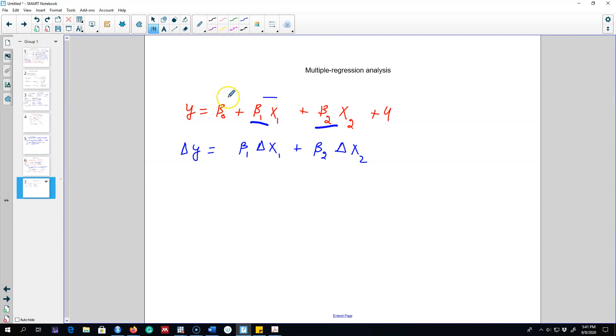As usual, this beta 0 represents the intercept, that is the value of y when x1 and x2 are equal to 0. It is the same as we saw in the simple linear model.